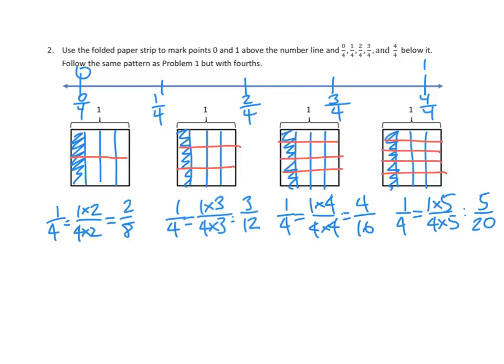Again, let me count that out. 1, 2, 3, 4, 5 are shaded out of 5, 10, 15, 20. Yep. 5 out of 20. So, 1 fourth is equivalent to 5 twentieths.